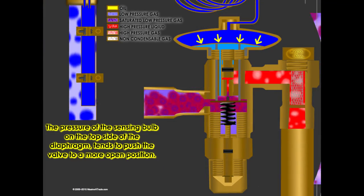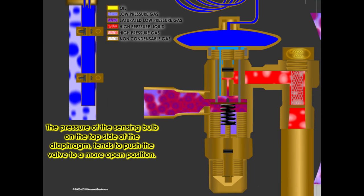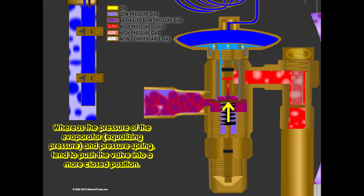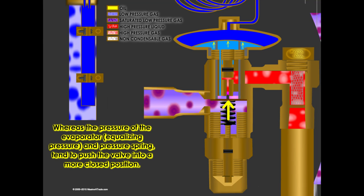The pressure of the sensing bulb on the top side of the diaphragm tends to push the valve to a more open position, whereas the pressure of the evaporator, or equalizing pressure, and pressure spring tend to push the valve into a more closed position.